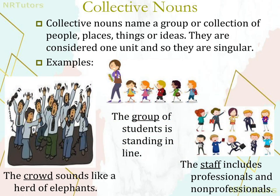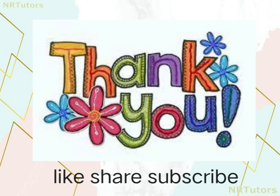So the next is collective nouns. Collective nouns name a group or collection of people, places, things, or ideas — they are considered one unit and so they are singular. Collective nouns हमें किसी भी चीज़, person, place, things के group या collection के बारे में बताते हैं। For example: 'The crowd sounds like a herd of elephants' — crowd इसमें एक collective noun है। 'The staff includes professionals and non-professionals' — staff एक collective noun है। 'The group of students is standing in the line' — group एक collective noun है। तो आज की इस वीडियो में हमने nouns को detail में जाना।